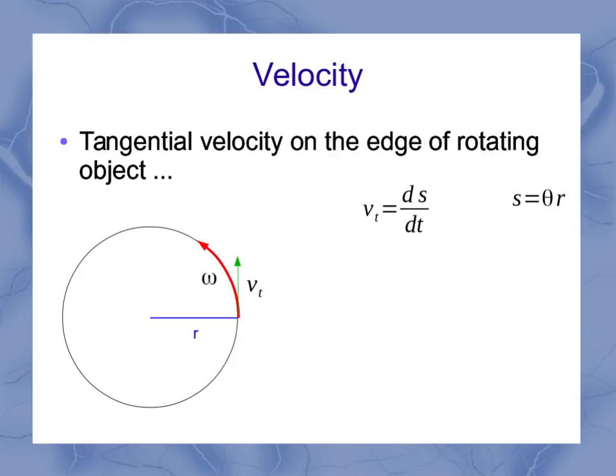Well, that tangential velocity is the derivative with respect to time of my position, or my s. And I just found that as being related to theta and r. Plugging that in and doing the derivative, I recognize that r doesn't have any change, so it comes out of the derivative. And I have just d theta dt. And d theta dt, the derivative with respect to time of the angle, is omega, the angular velocity. So I can relate the tangential velocity and the angular velocity.